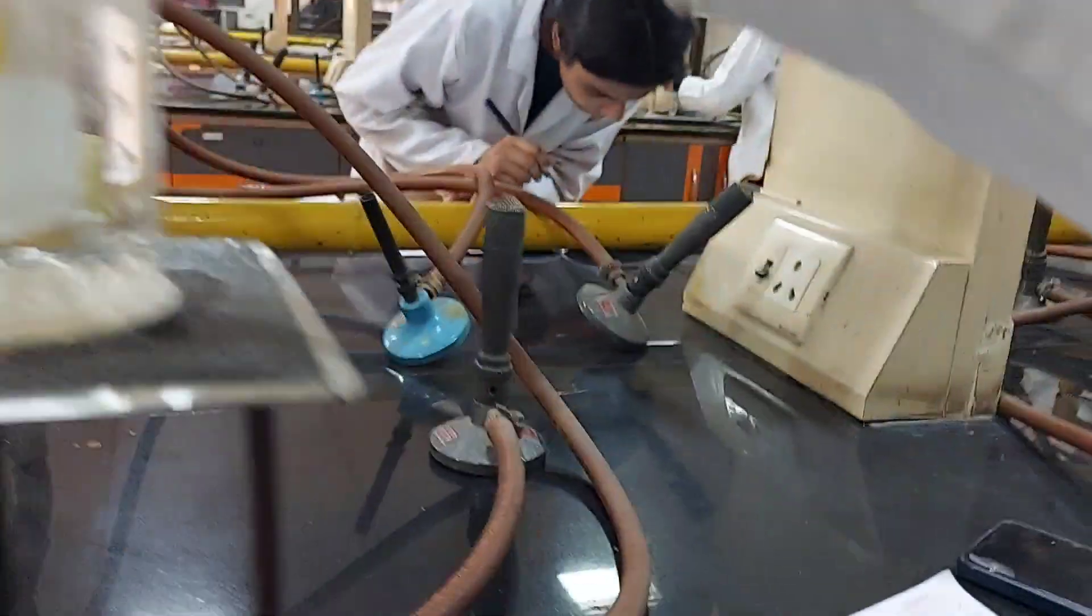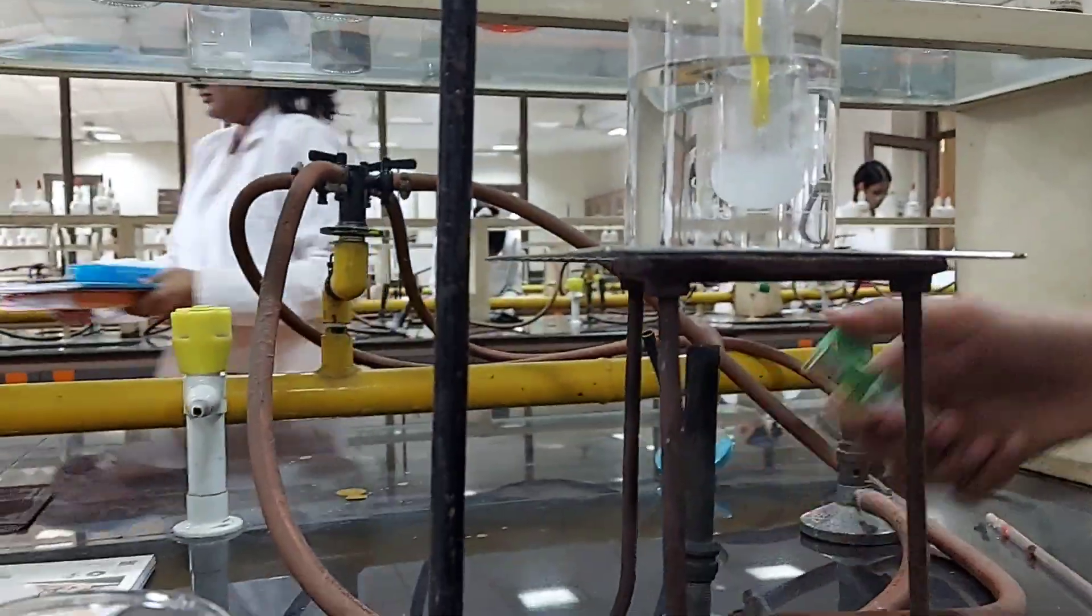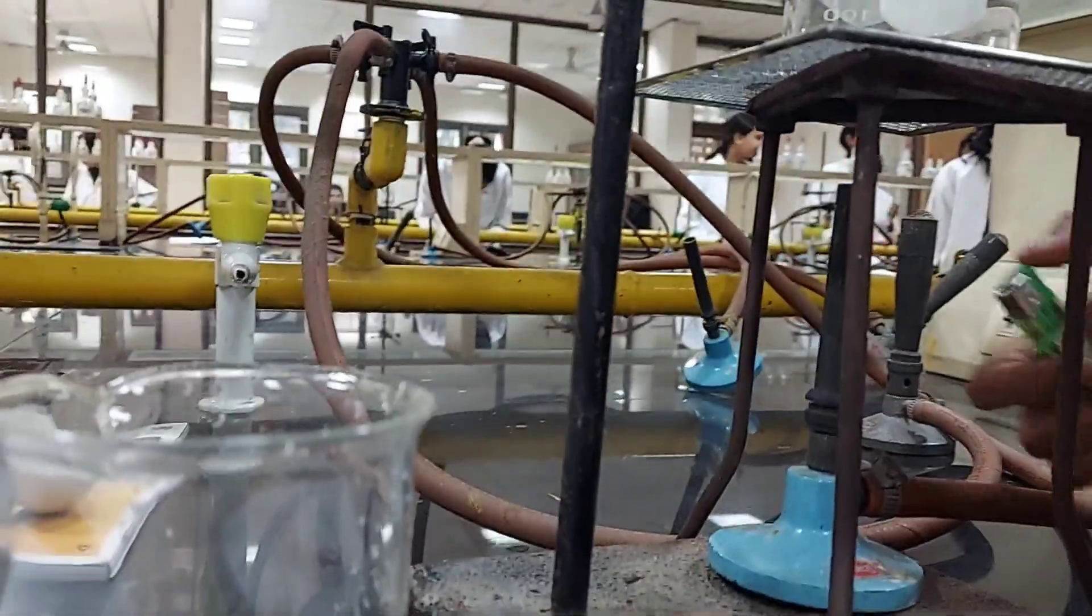With each addition of water, we stir and check for turbidity. If turbidity appears, we warm the water bath with constant stirring of the phenol and water mixture. Then we remove the burner when turbidity disappears.